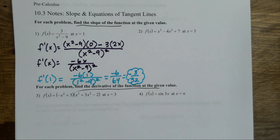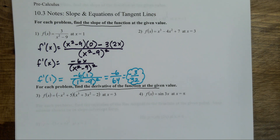What does that tell me? If I were to graph this function at x equals one, this graph must be decreasing at a fairly slow rate. How do I know that? Negative three over thirty-two is not a very big negative number — it's pretty close to zero, so it's a pretty slow rate. The curve must be at that location sort of flattening out a little bit.